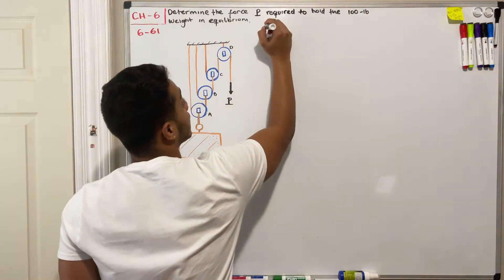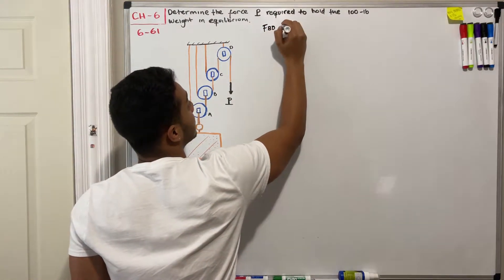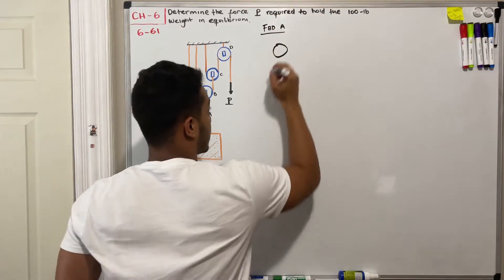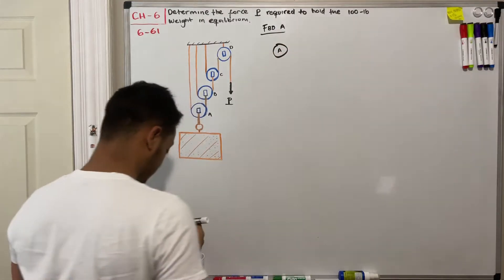Let's start drawing my free body diagram of my pulley A. What do I have in my pulley A?